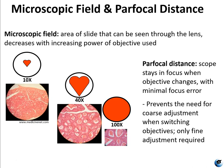The idea of your microscopic field and par focal distance can be a little tough to wrap your head around, but it's very important. If you understand how these things work, it's going to help you learn how to use the microscope a lot faster and more efficiently. The key idea is that when you increase magnification, the specimen is going to look very different — not only because it's getting bigger, but mainly because you're actually looking at a much smaller portion of the specimen.